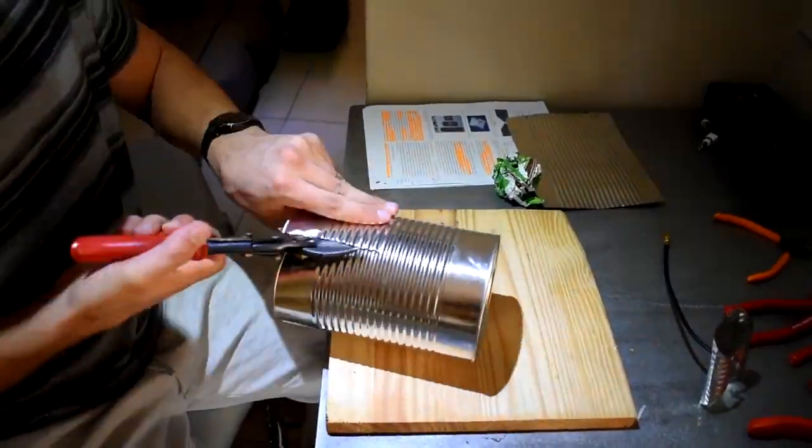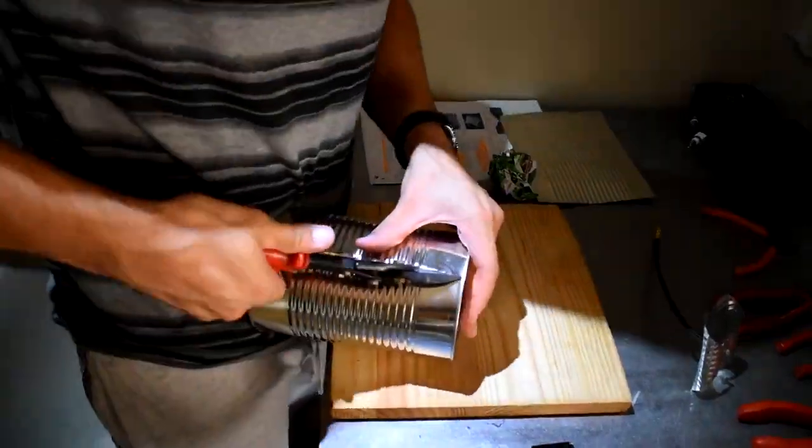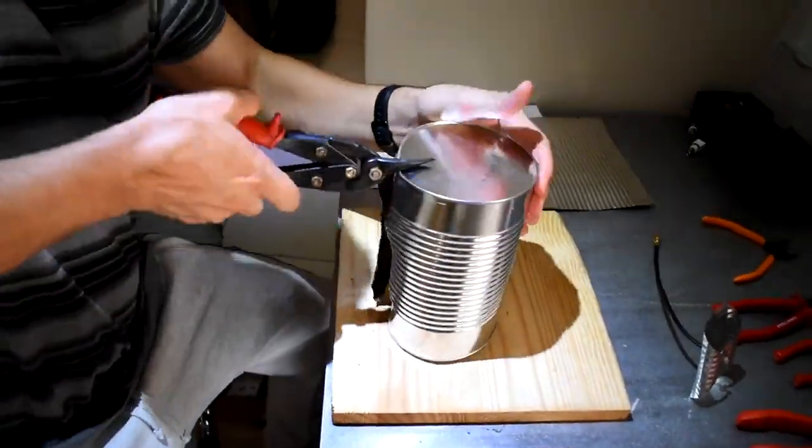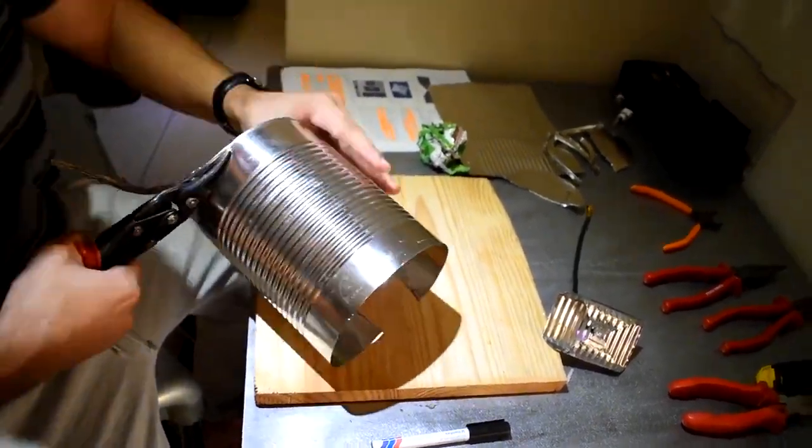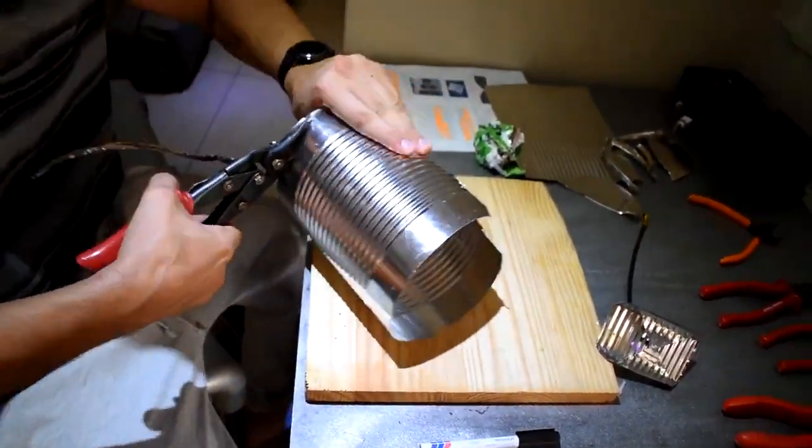To get started, use the metal shears to cut the Milo tin down the middle. Thereafter, cut the top and bottom reinforcing borders of the tin to allow for the complete flattening of the Milo tin itself.